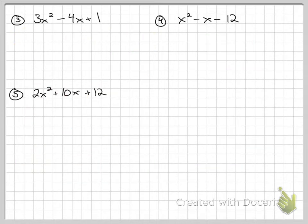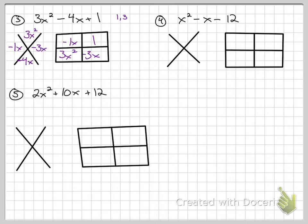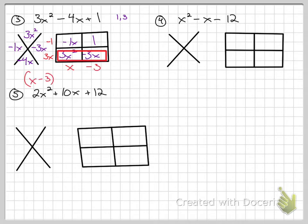For number 3: 3x² − 4x + 1. Top of diamond is 3x², bottom is negative 4x, area diagram has 3x² and 1. The only factors of 3 are 1 and 3. Trying negative 1x and negative 3x: multiplies to 3x² ✓ and adds to −4x ✓. Looking at the bottom row, 3x is the common factor. Dividing: −3x ÷ 3x = −1, and 3x² ÷ 3x = x. The answer is (x − 3)(3x − 1).